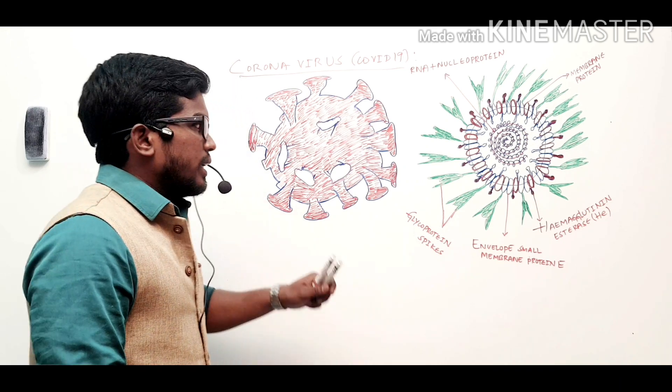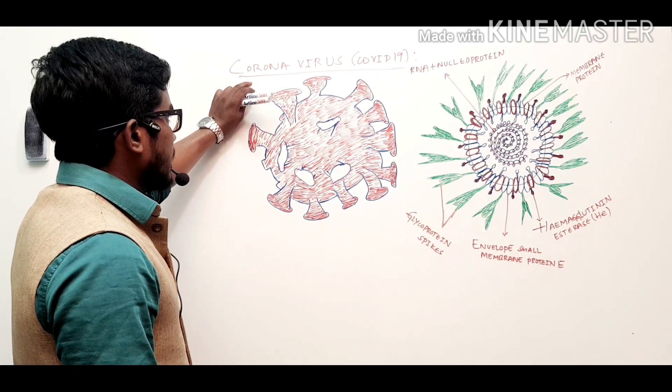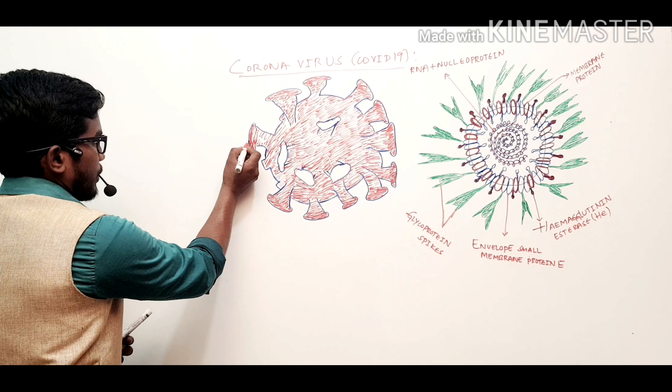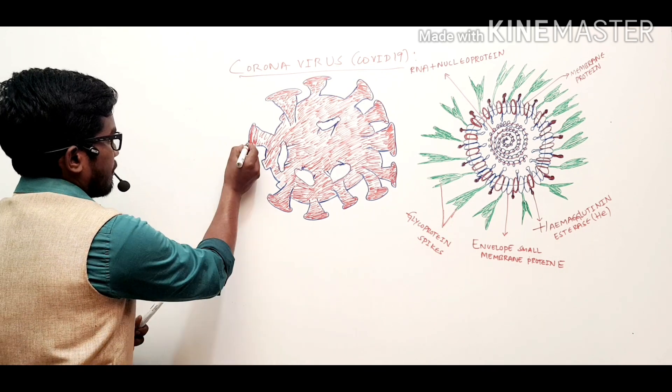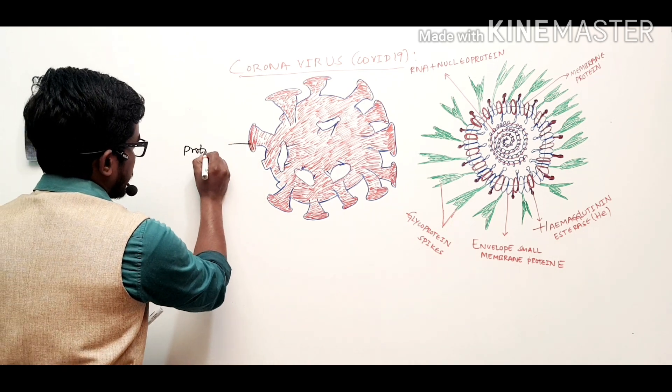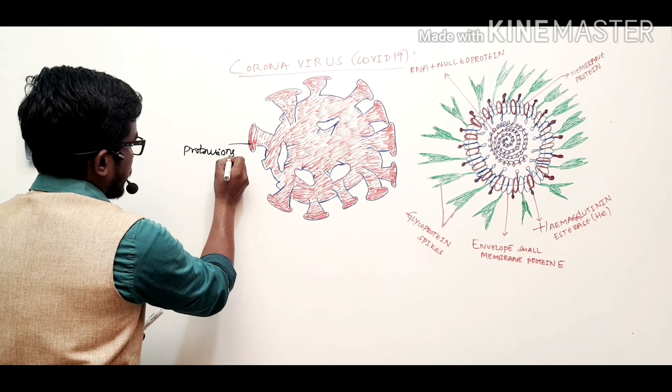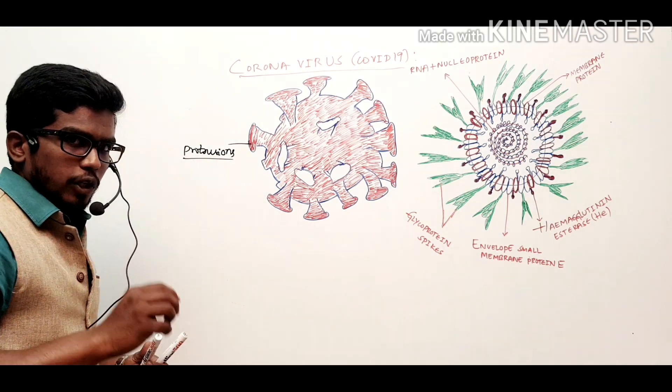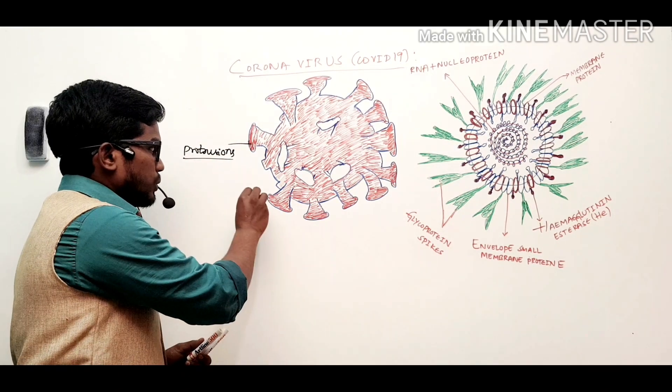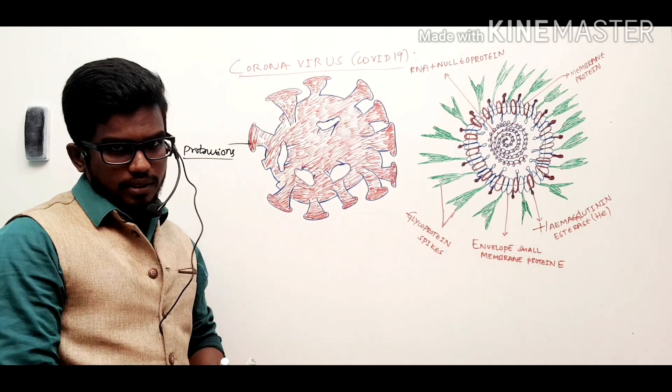Here dear friends, corona basically indicates the protrusions which we can find on the surface of this virus. These protrusions when observed under the electron microscope are similar to the emperor's crown, hence the name coronavirus.